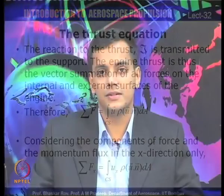Thrust is generated in one direction. Some advanced military engines use thrust vectoring, where the nozzle can be deflected in different ways to achieve thrust in various directions — enabling vertical take-off and landing or extreme in-flight maneuvers. For a normal passenger aircraft, the nozzle is fixed and always generates thrust in the x-direction.